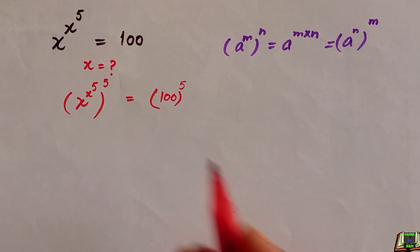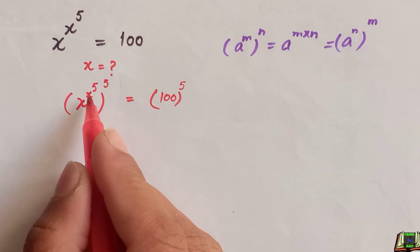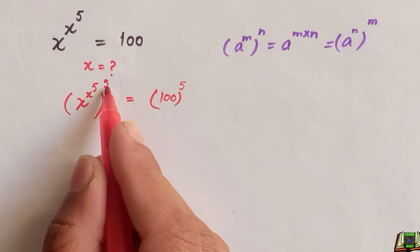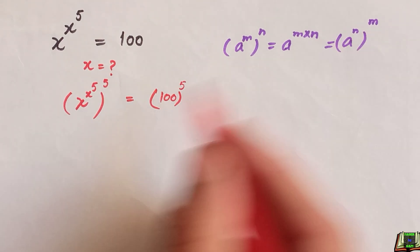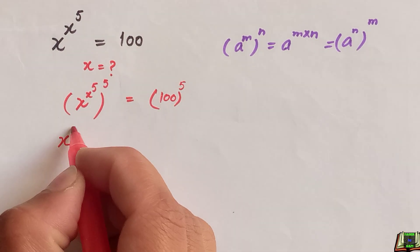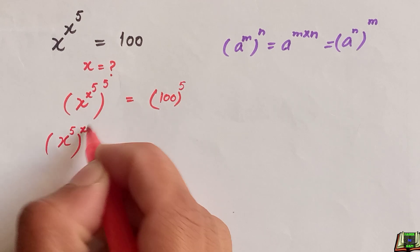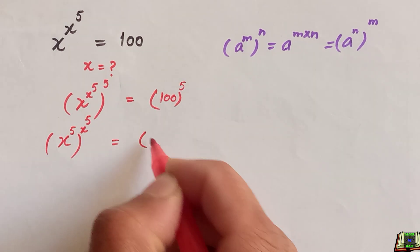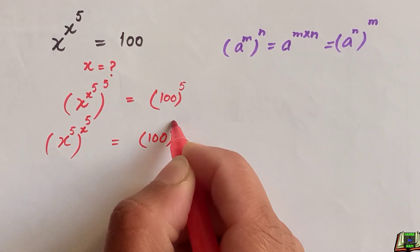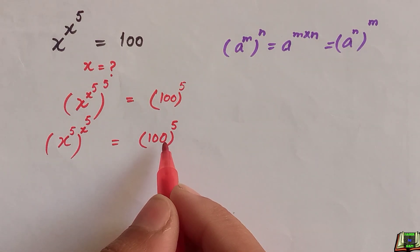So here, x to the power 5 is like m, and the whole power 5 is like n. We are going to write this in the form a raised to power n raised to power m. So the left side becomes x to the power 5, whole to the power x to the power 5. The right-hand side stays as is for the next step.